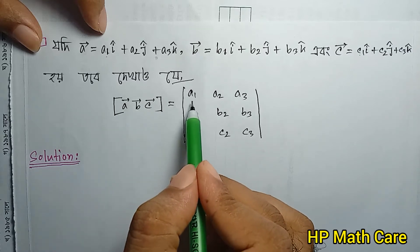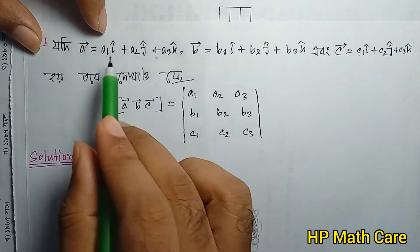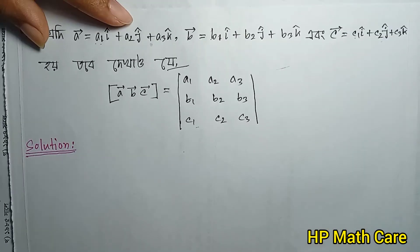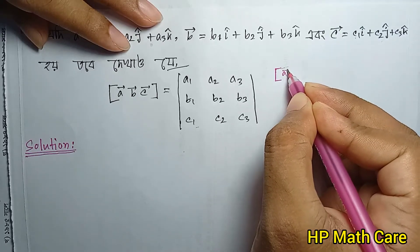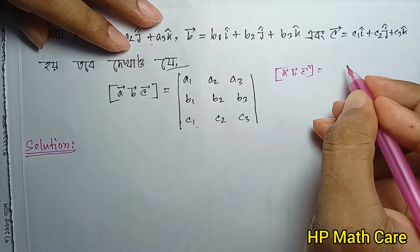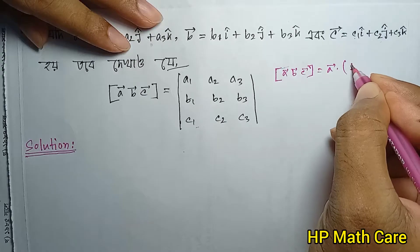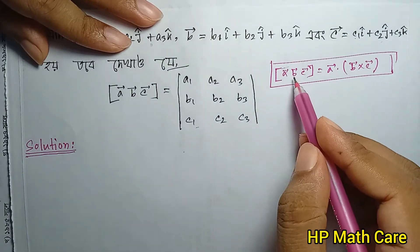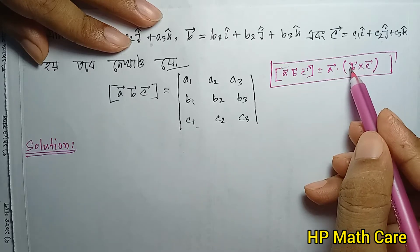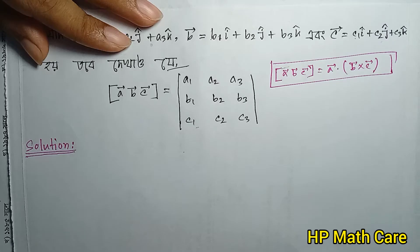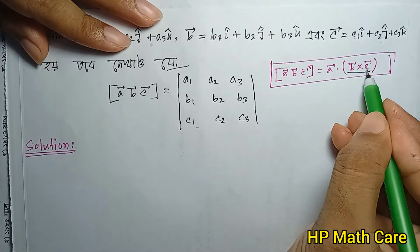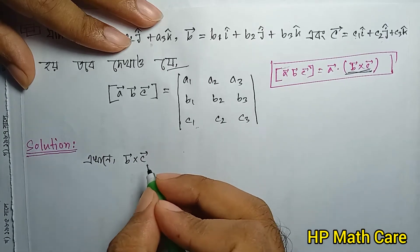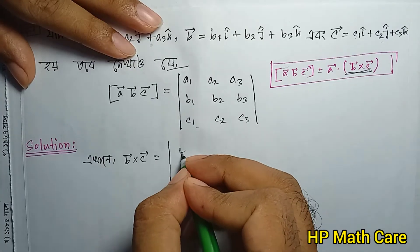Box product [a, b, c] equals a vector dot (b vector cross c vector). The determinant form is a1 a2 a3 / b1 b2 b3 / c1 c2 c3. So box product [a, b, c] equals a vector dot (b cross c).